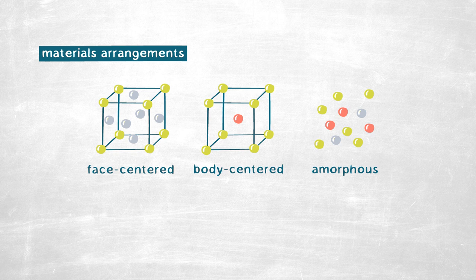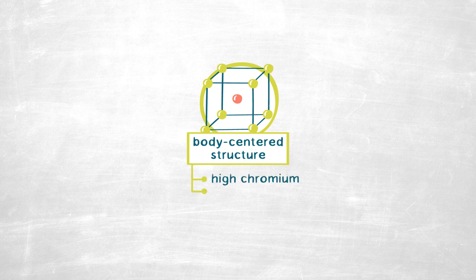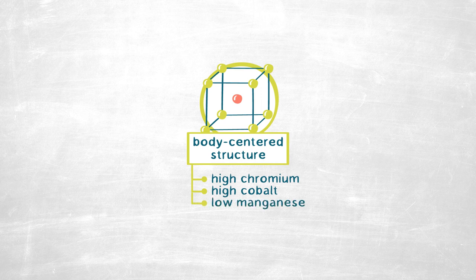And we find that in our case, the best arrangement was body-centered cubic with a certain composition. So what we need to completely substitute the platinum from our daily life is a body-centered cubic structure with high quantity of chromium and cobalt and low quantity of manganese. Like this, we will have the perfect candidate for our new fuel cells.